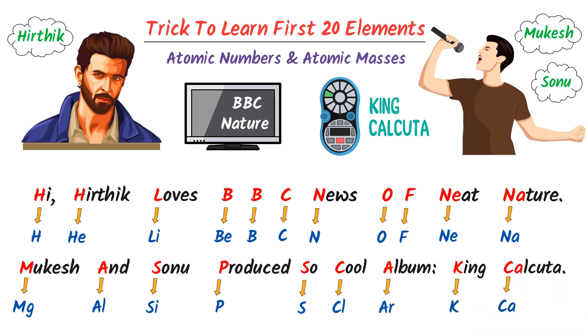C stands for Ca (Calcium). Thus this is the complete list of the first 20 elements of the periodic table.